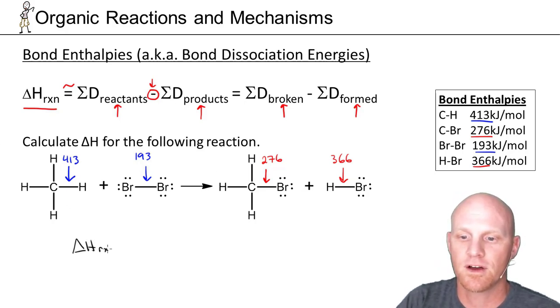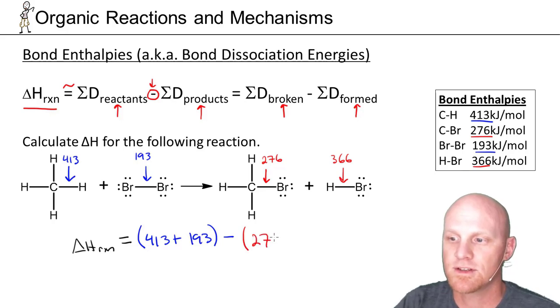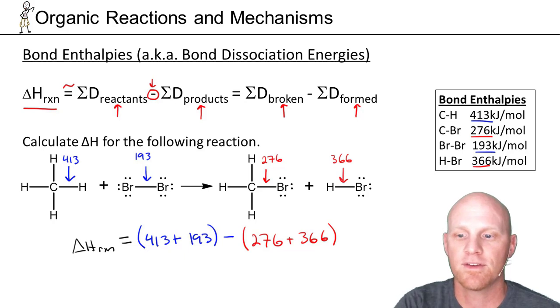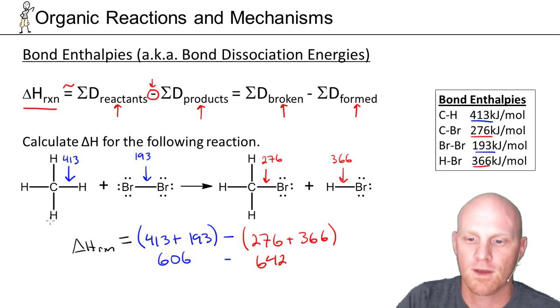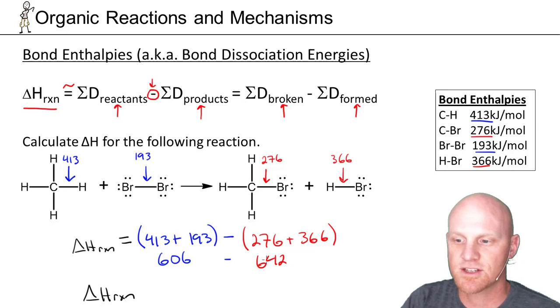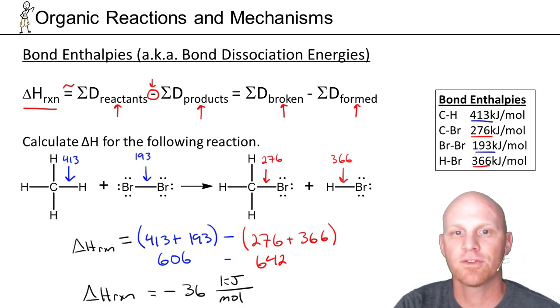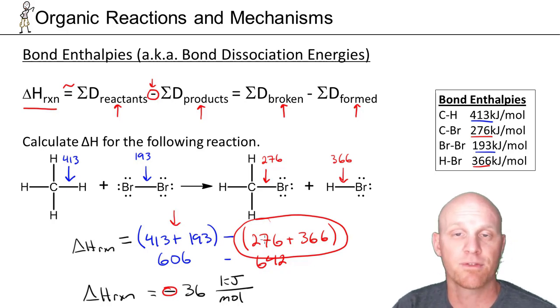And then simply we calculate the delta H of the reaction, bonds broken minus bonds formed here. So it's going to be a total of 413 plus 193 minus, and then the sum of the bonds formed, so 276 plus 366. If we add these together, 413 plus 193, it's almost about the same as 413 plus 200. It should be 613, but we've overestimated by 7, so that's going to be 606 kilojoules. And then we'll subtract off 276 and 366, that's 642. So the delta H of the reaction equals 606 minus 642, which is going to be negative 36 kilojoules per mole. Overall, with a negative delta H here, this is going to be an exothermic reaction. We are releasing more energy than absorbed in the bonds that are formed than the energy that is absorbed by the bonds that are broken. So overall, a negative delta H.